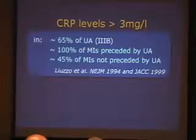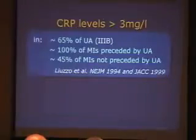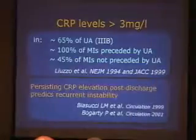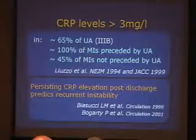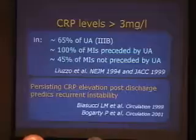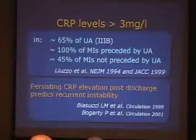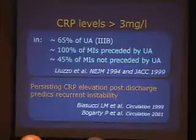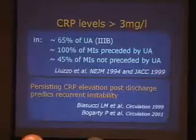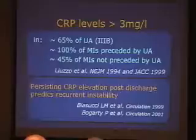This was the first study where CRP was shown to be associated with persistent instability and infarction independently from elevated markers of necrosis, because we excluded all patients with elevated troponin. Conversely, all patients in whom infarction was preceded by unstable angina had elevated CRP on admission within 6 hours, whereas only 45% of patients presenting with infarction not preceded by unstable angina had elevated CRP. The story goes on: persisting CRP elevation post-discharge predicts recurrent instability. This is from the paper we published with Luigi Biasucci on Circulation 1999, and a follow-up study by Peter Bogarty in Canada, Circulation 2001. Patients tending to have recurrent events tend to have elevated inflammatory markers — CRP or interleukin-6.